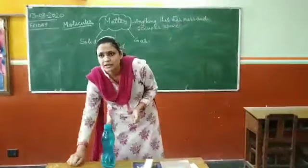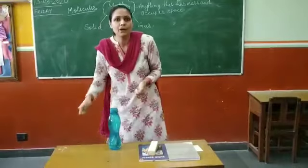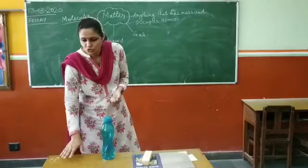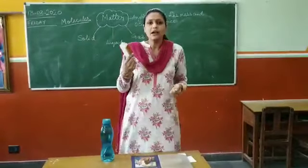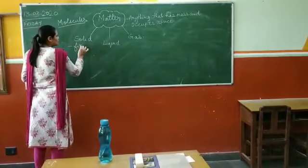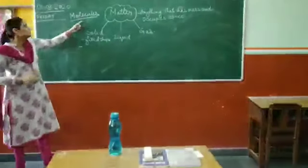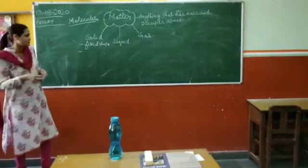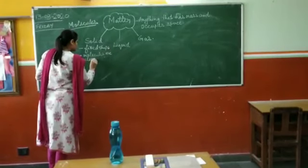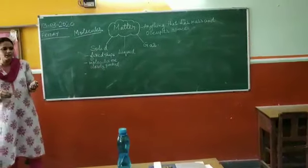Your table here is solid. You cannot change the shape of this table unless you actually break it with an axe. Of course you can change the shape, but only if you apply force. Without applying force, you cannot change the shape of the table or the duster — they are rigid. Why? Because of the arrangement of molecules. So we can say solids have a fixed shape and the molecules are very closely packed. And very importantly, we know that they cannot flow.